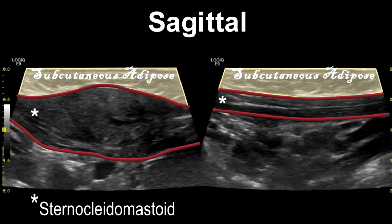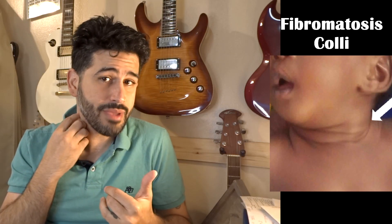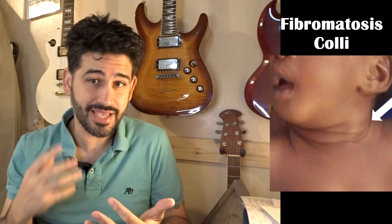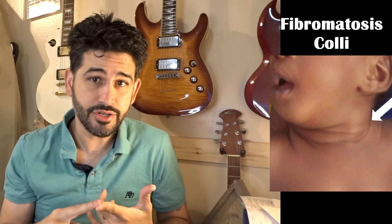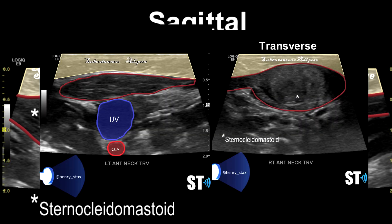Fibromatosis coli is a benign tumorous overgrowth of the sternocleidomastoid muscle — benign, so non-cancerous, and it will not metastasize anywhere else in the body. Use a linear transducer, take longitudinal dual screen images, and don't forget to take transverse images and do dual screen images in transverse as well.